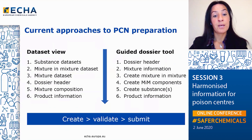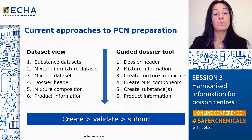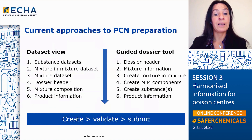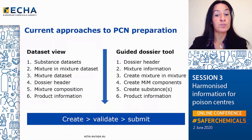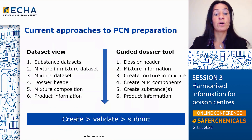On the other hand, preparing a Poison Centers notification using the Guided Dossier tool allows you to provide the information in a different order. First, you define the information about the dossier, like in which market areas you want to notify and in which languages you want to prepare the dossier. Then you fill in the information on the mixture, like its pH or logical information related to that mixture. Then you provide information on the composition, creating a mixture-in-mixture if necessary, creating the mixture-in-mixture components, and adding all the substances you need to complete the composition of your final mixture.